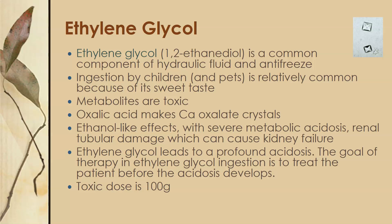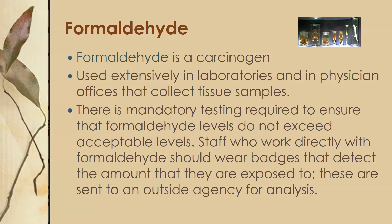The next alcohol is ethylene glycol, also known as 1,2-ethanediol, which is a common component of hydraulic fluids and antifreeze. Ingestion by children and pets is relatively common because of its sweet taste — it can be found on the ground if leaking from a vehicle or boat. The metabolites of ethylene glycol are what's toxic. Oxalic acid can form calcium oxalate crystals, which can crystallize in the urine and be detected there. It causes ethanol-like effects with severe metabolic acidosis and renal tubular damage, which can lead to kidney failure. The goal of therapy is to treat the patient before acidosis develops. A toxic dose is 800 grams of ethylene glycol, which is not that much.